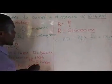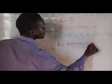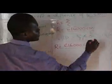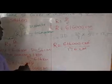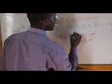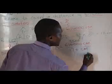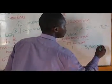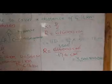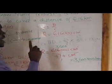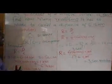Now concluding the working: revolution equals 616,000 centimeters over 176 centimeters. Simplifying, centimeters cancel, and 176 divides into 616,000 exactly 3,500 times. So our revolution is 3,500 revolutions. This wheel will make 3,500 revolutions to cover a distance of 616,000 centimeters. Just use the formula DRC — Democratic Republic of Congo.